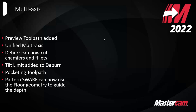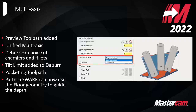On the SWARF tool path, you can now use floor geometry to guide the depth. The tool tip picture within the tool path gives a good idea of what this does. Before you'd have to create an edge curve on the bottom floor and have it follow that. Now you can just drop the tool to the floor and follow that floor geometry as it performs the SWARF cut on the given wall.